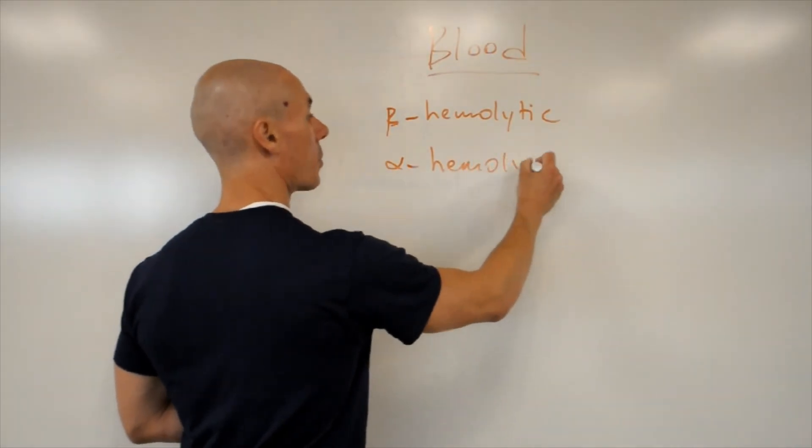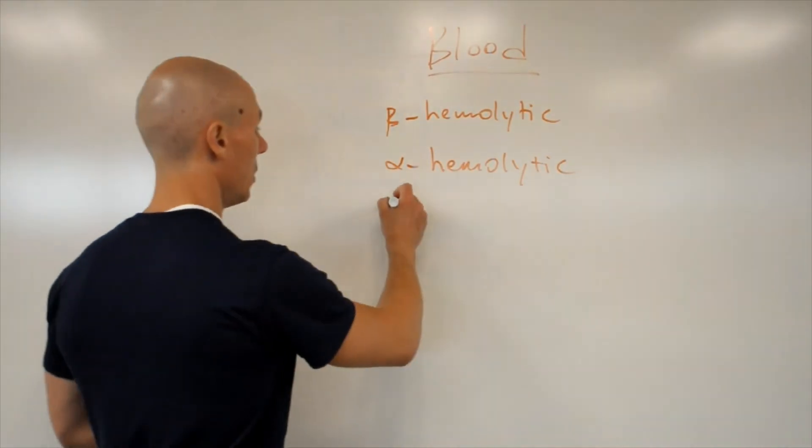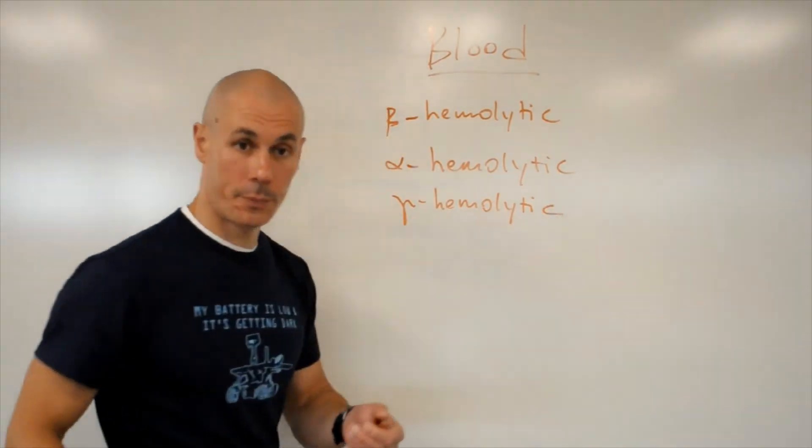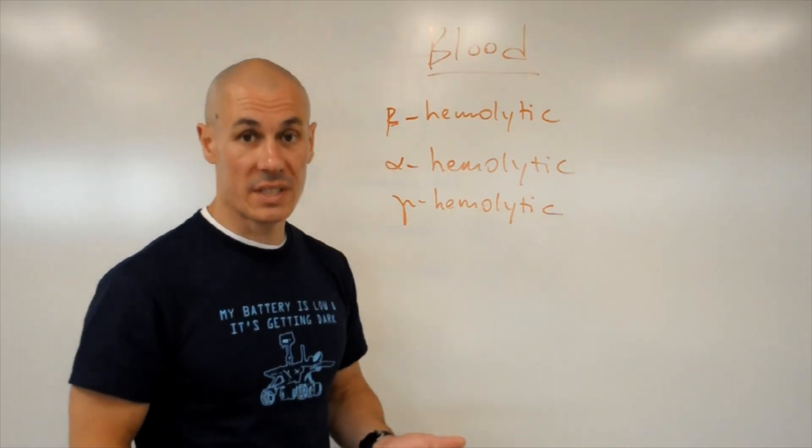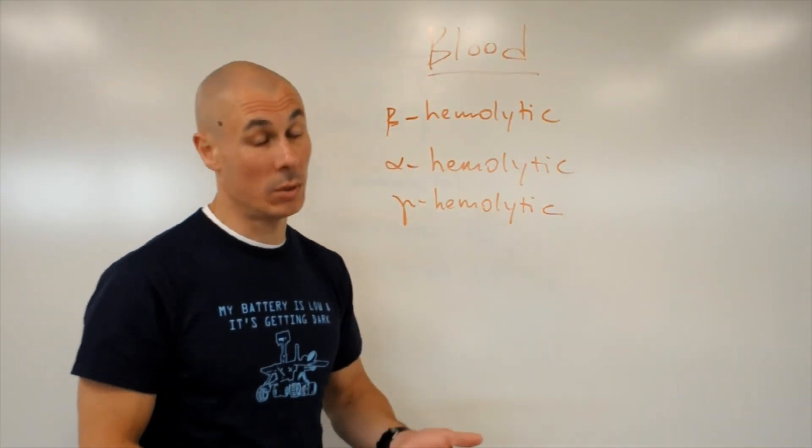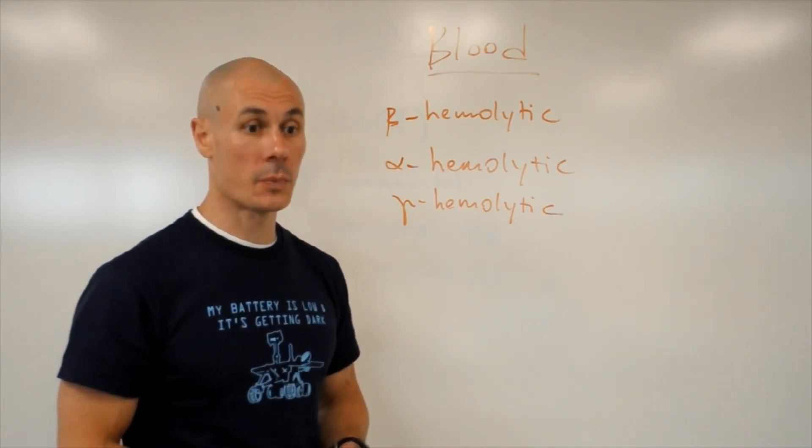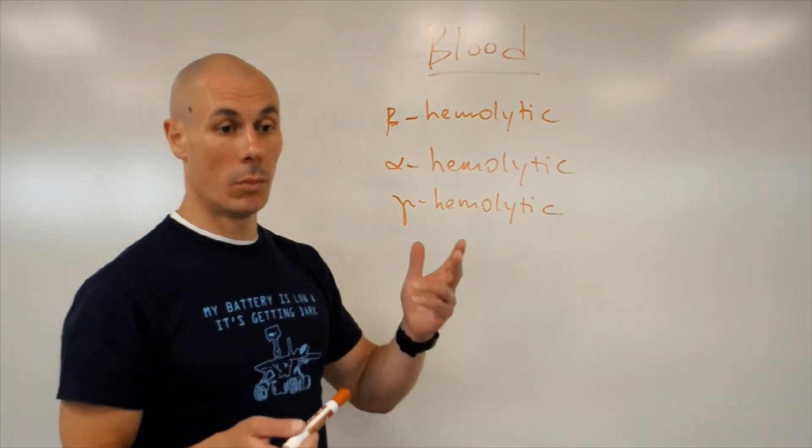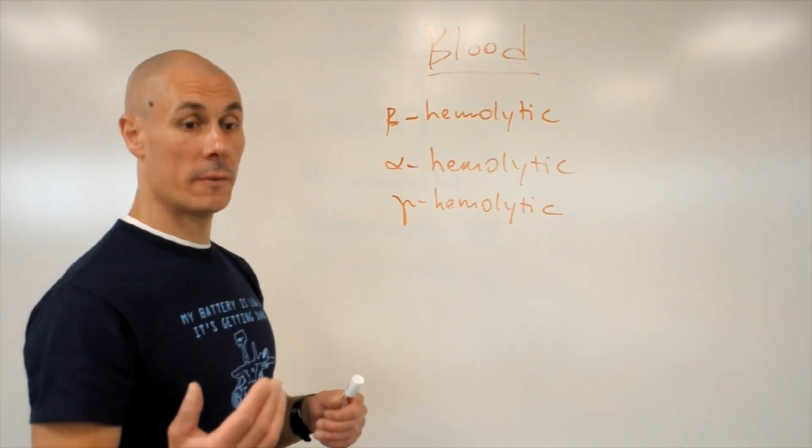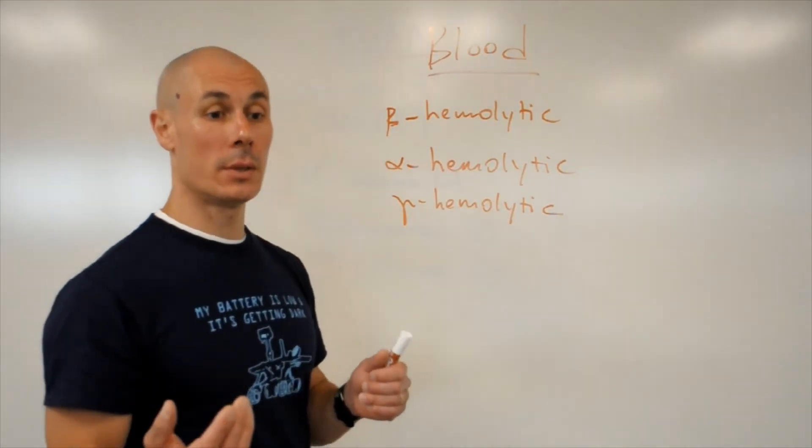And quite surprisingly, microorganisms that do nothing to the red blood cells are called gamma hemolytic microorganisms. So it is pretty conceivable that beta hemolytic microorganisms, the ones that break down red blood cells, will also be most virulent, more likely to lead to disease. So we will attempt to distinguish the microorganisms based on that feature, the ability to break down red blood cells. Now we're moving on to the inoculation.